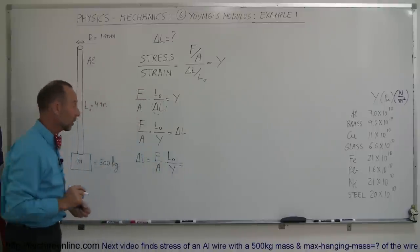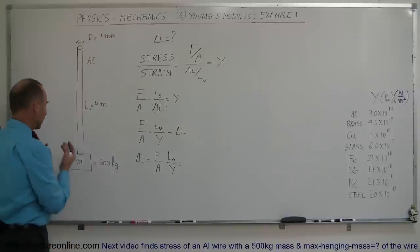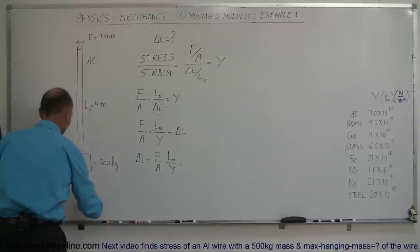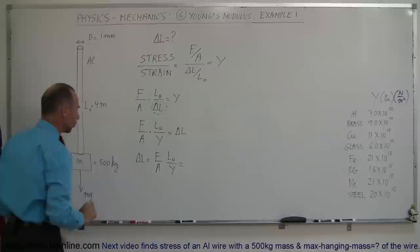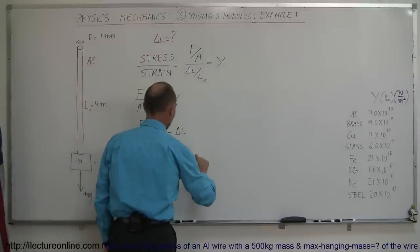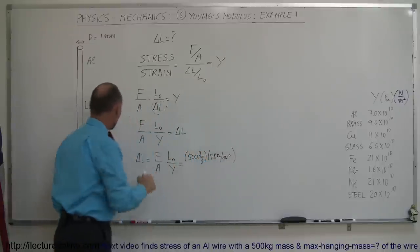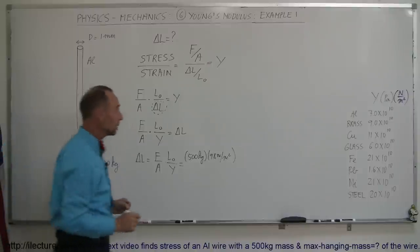And now let's go ahead and plug in the values. What is the force? Well, it turns out, if you hang a mass from a wire like that, the force of gravity will be M times G. So, we have to have M times G for the force. So, it would be a mass of 500 kilograms times G of 9.8 meters per second squared. The original length was given to us as 4 meters.